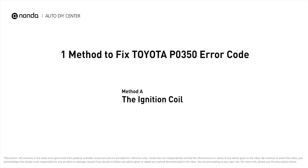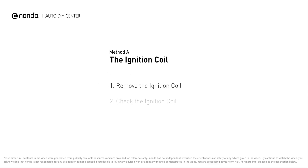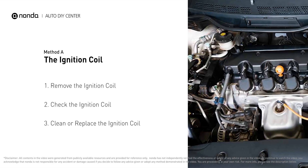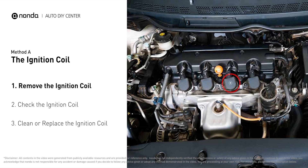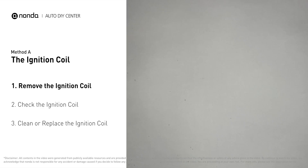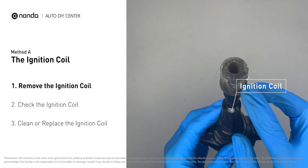Method A: the ignition coil. The ignition coil is either physically connected to the spark plug with wires, or it sits on top of the spark plug without using wires. First, carefully remove the ignition coil from the engine.